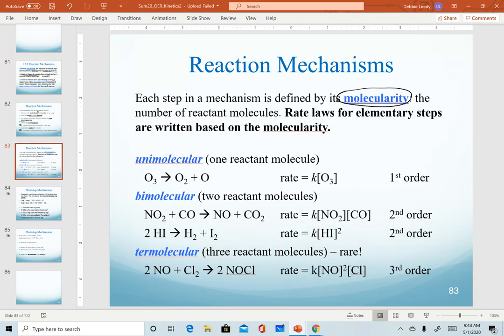The first term that we define here is molecularity. Molecularity is specifically describing the number of reactant atoms or molecules. In other words, it's describing how many reactant species we have. Molecularity is a term that describes a number, not just counting those molecules.